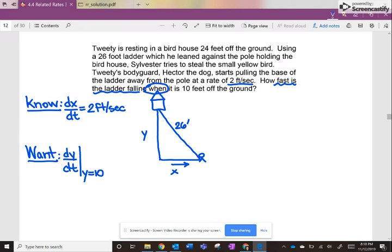So I want to find dY/dt when Y equals 10. So now that I know the rate that I've been given, and I know what I want, let's write an equation. We've got a right triangle going on here. So this is going to be our Pythagorean theorem example. So we have X squared plus Y squared. Now since the ladder is a constant height, that will be 26 squared.